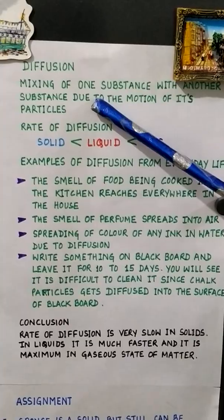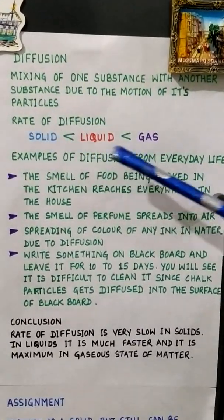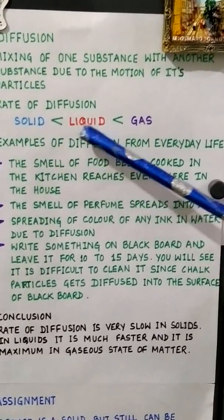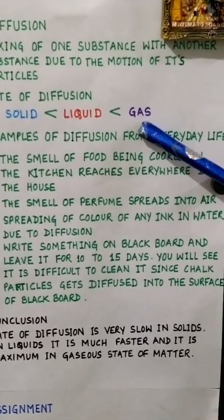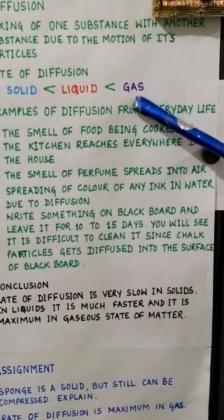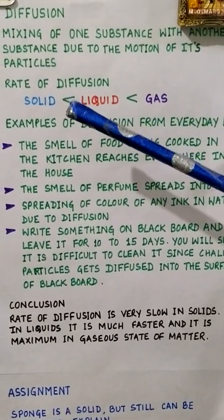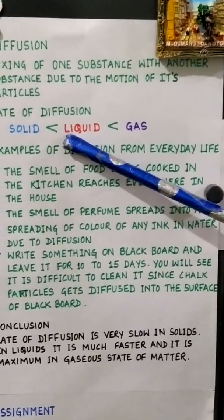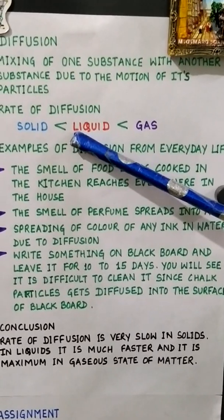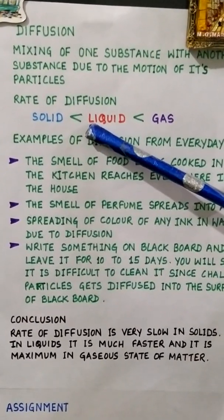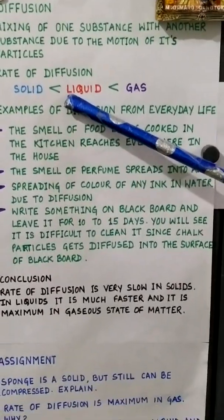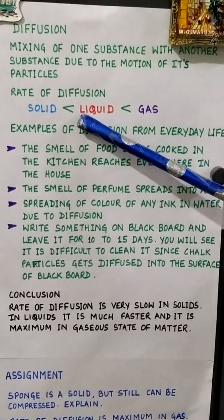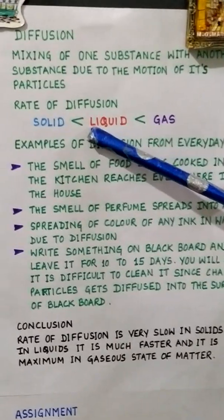The rate of diffusion is different in different states of matter. The rate of diffusion is minimum in solid, moderate in liquid, and maximum in gaseous state. The rate of diffusion depends on the inter-particle space and force of attraction. In solids, particles are strongly bonded and movement is difficult, so diffusion is very slow. In gases, particles have less force of attraction and are free to move, so diffusion is maximum.